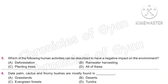Question 5: Which of the following human activities can be described as having a negative impact on the environment? Option B, rainwater harvesting, and Option C, planting trees, are good activities beneficial to the environment. Option A, deforestation — the cutting down of trees — is very harmful for our environment. So the correct answer is Option A: Deforestation.